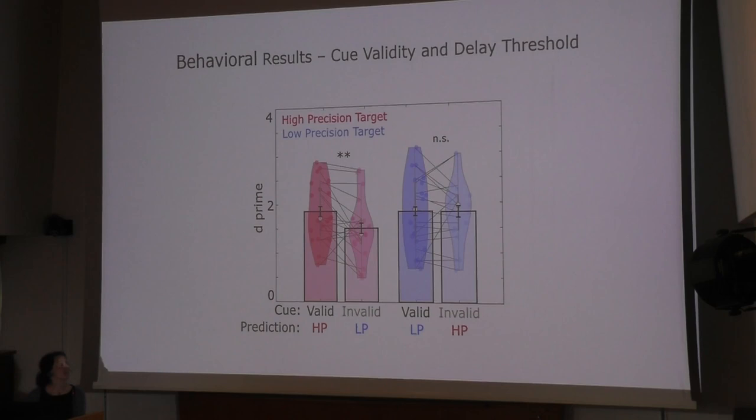The behavioral results show that the information of the cue is indeed used by the brain and it modulates the delay detection performance. The anticipated temporal precision affects the perceptual sensitivity for the high precision target, as you can see here.